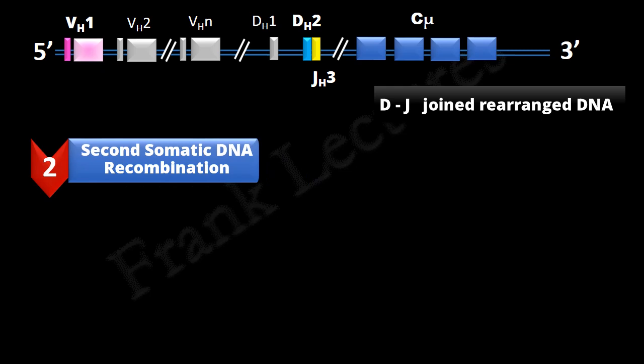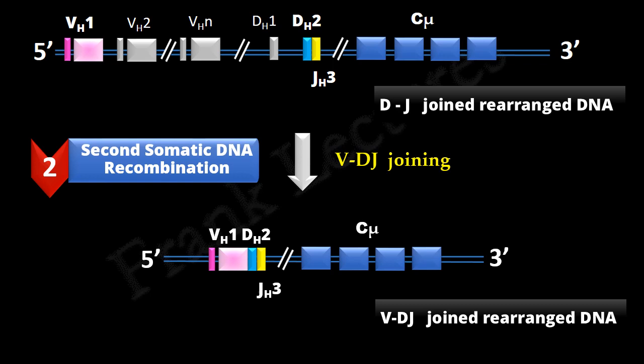In the second step, next gene rearrangement event takes place. A randomly selected V gene segment along with its leader sequence is joined to the rearranged D-J segment. Let's say, first V gene segment is joined to the D-J gene segment. With this gene rearrangement event we get V-D-J joined rearranged DNA. And thus, we have a complete V region exon, which is formed by randomly selected V, D, and J gene segment.